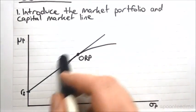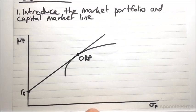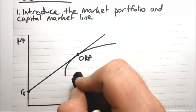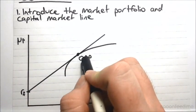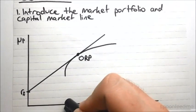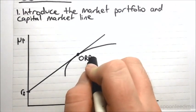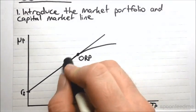Where along the line they invest will differ from investor to investor, depending on their degree of risk aversion and thus their unique utility equation. They will all, however, invest in the risk-free asset and the optimal risky portfolio. So we need to think about what this really means — if everybody is investing into this same optimal risky portfolio and no other portfolio...